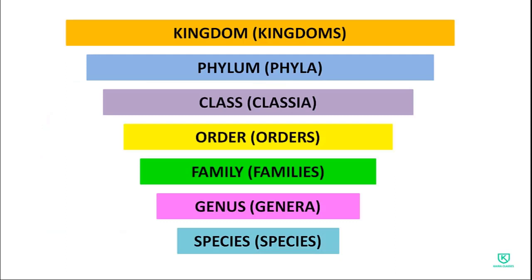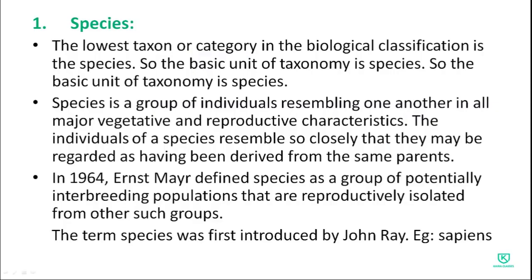The plurals of taxonomic categories: Kingdoms, Phyla, Classes, Orders, Families, Genera, Species. The lowest category is species and the highest category is kingdom. Moving from specific to complex: species → genus → family → order → class → phylum → kingdom.